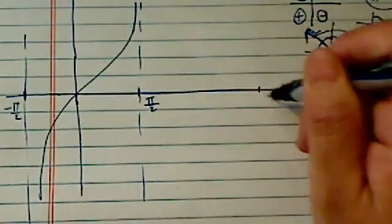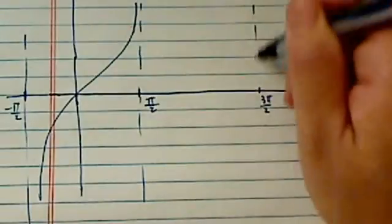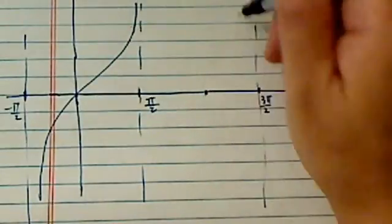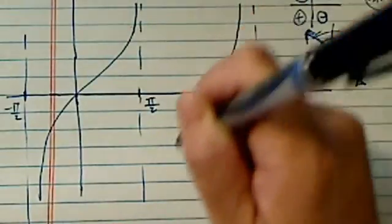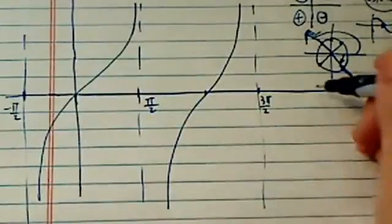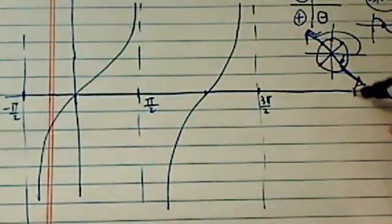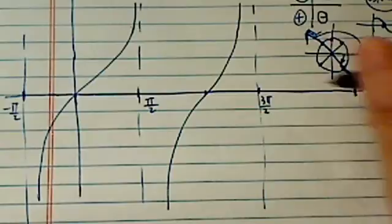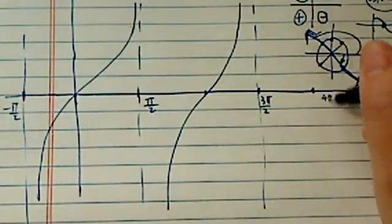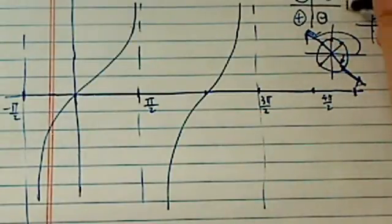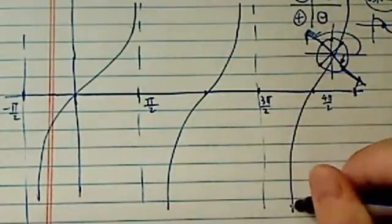So next, the one over here is 3 pi over 2. Let's draw it over here. And then the curve goes down this way. And let's draw one more arm. I'm running out of room here. So this is 4 pi over 2. So it comes down sweeping this way.